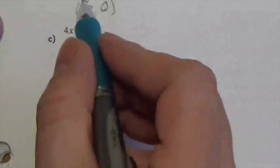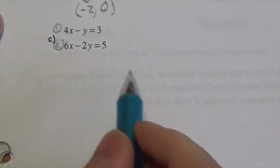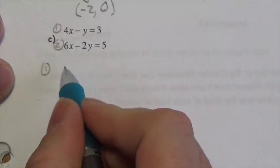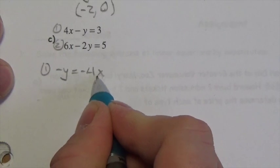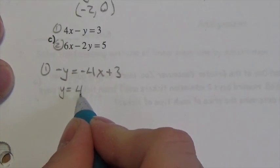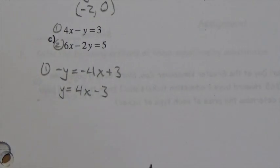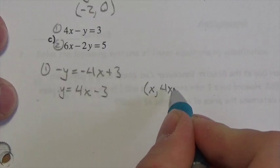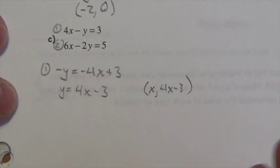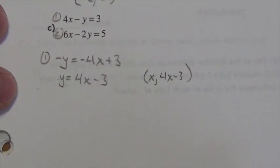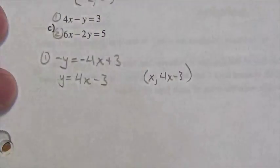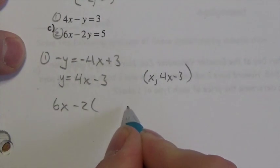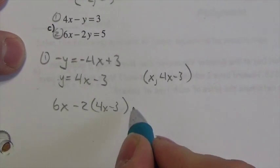Let's look at another one. The system is 4x minus y equals 3 — equation one — and equation two. The easiest one to solve here looks like y in the first equation. I'll bring the 4x over: negative y equals negative 4x plus 3, then divide everything by negative to get y equals 4x minus 3. So the point I'm working with is x comma 4x minus 3. I'll take that point and substitute it into the other equation: 6 times x minus 2 times, in parentheses, 4x minus 3, equals 5.